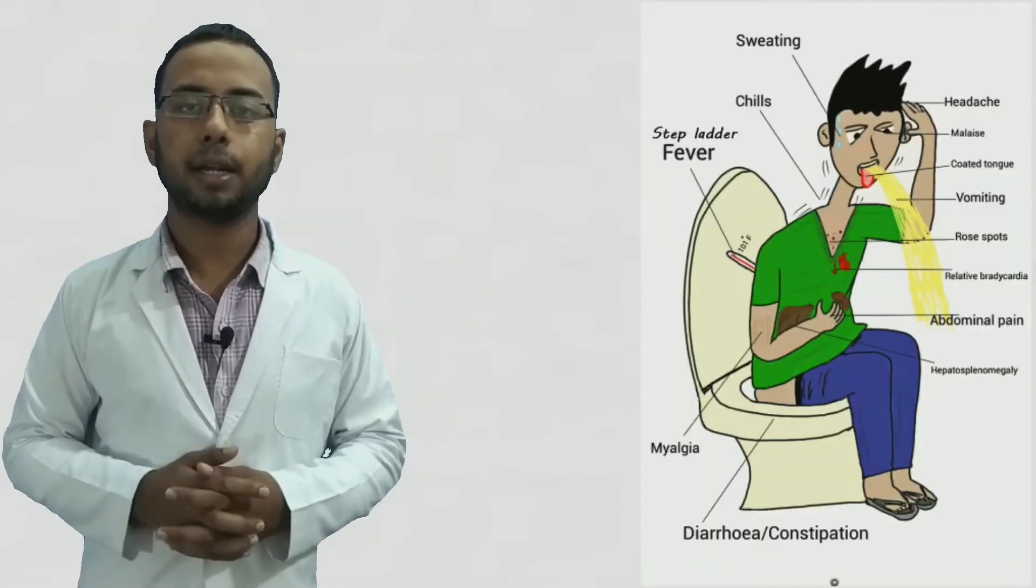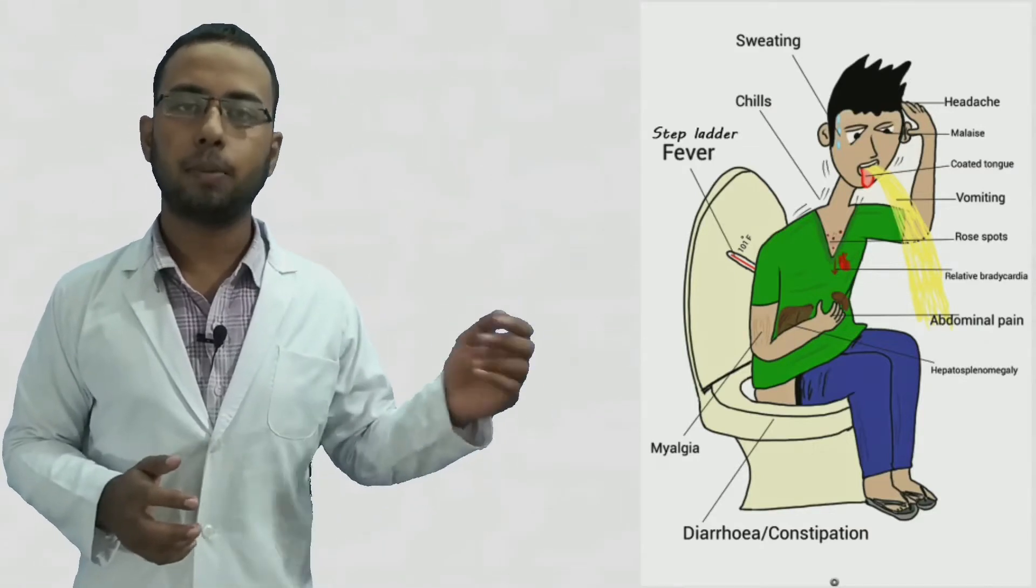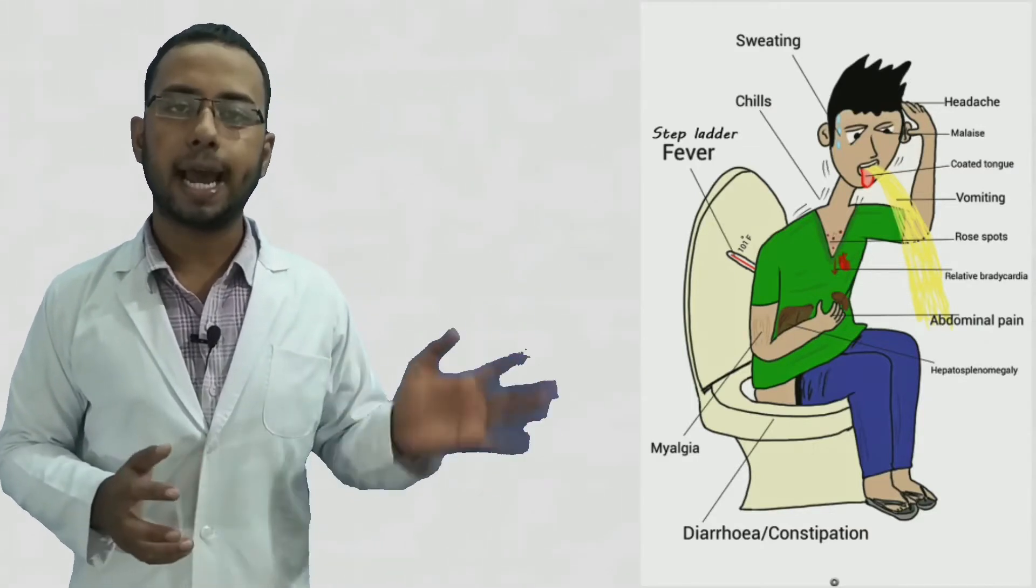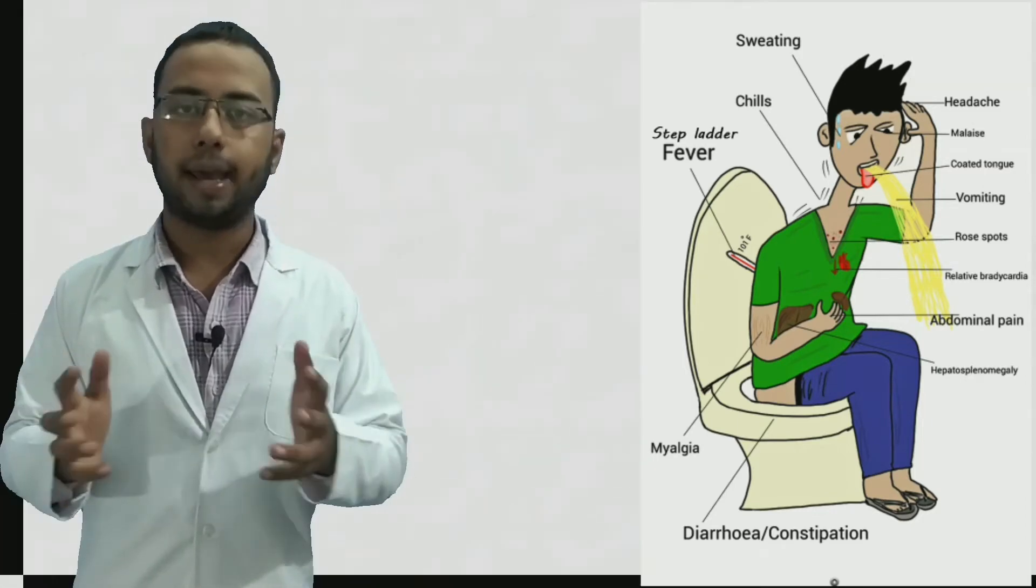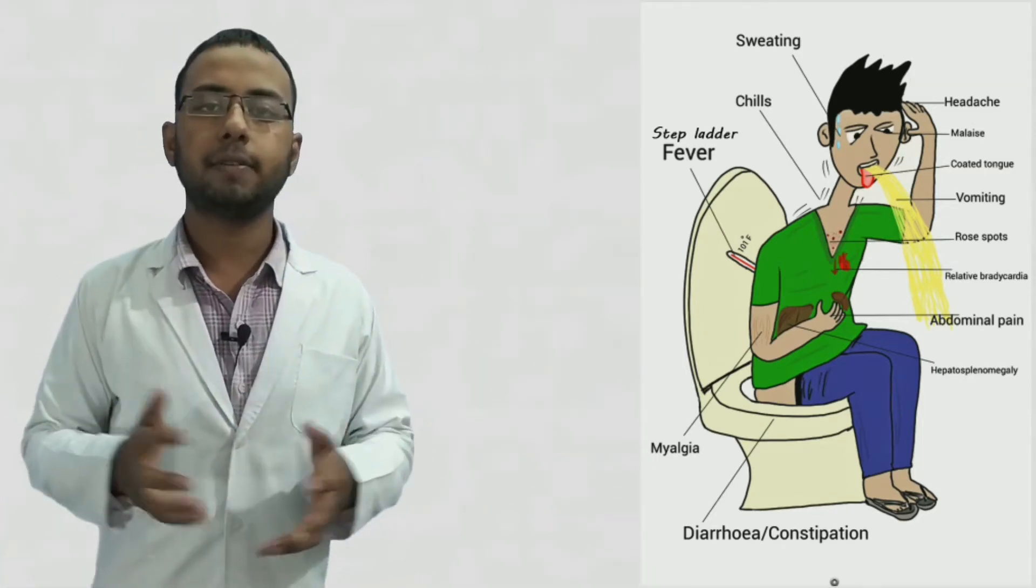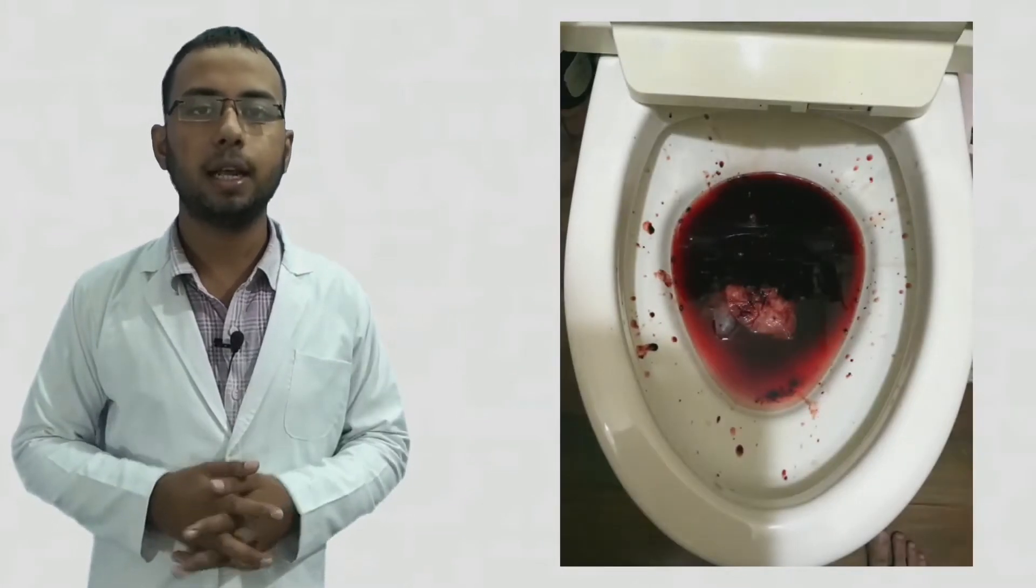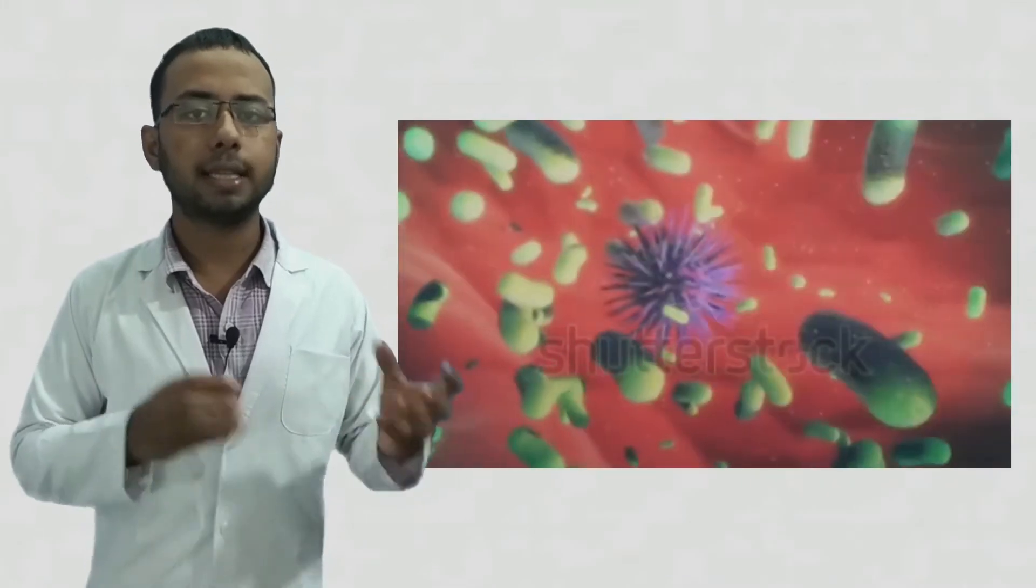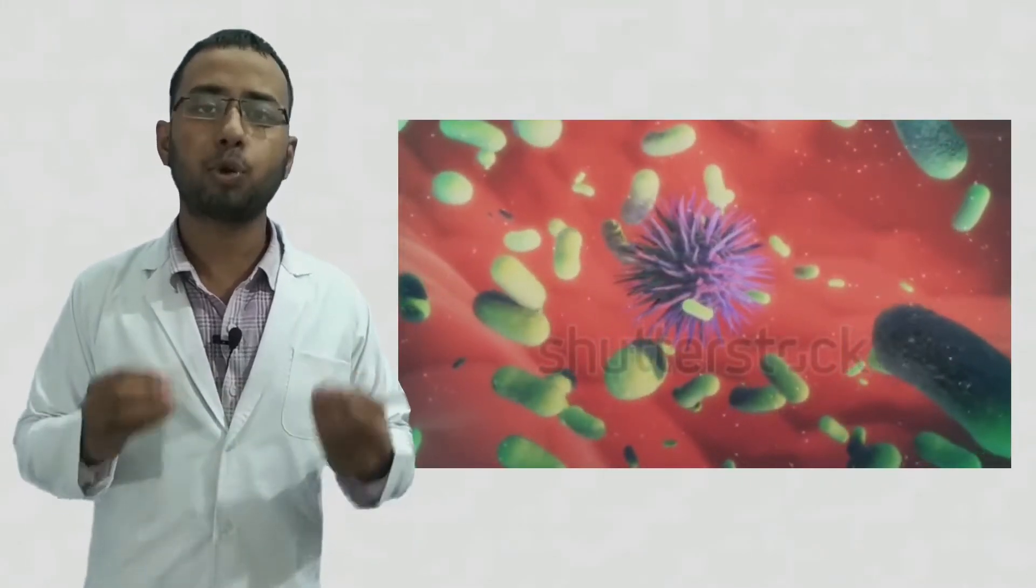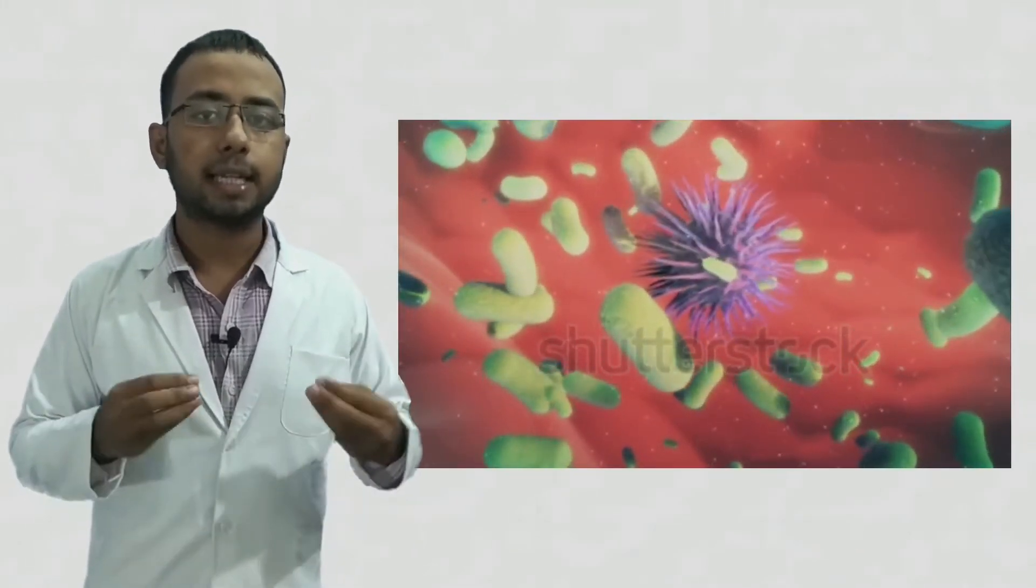Some general things that occur in typhoid are weakness, abdominal pain, constipation, headache, and even in some cases vomiting and diarrhea. In severe cases, blood also comes in fecal material. That is because they live in our intestine, so in severe cases they create pores in our intestine, that's why bleeding comes with fecal material.